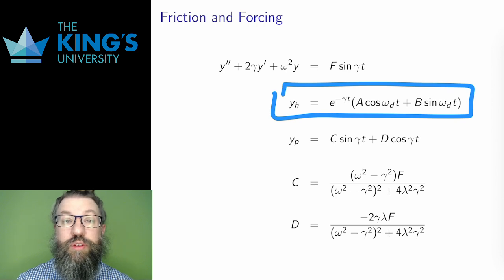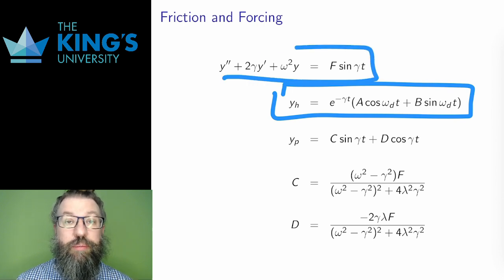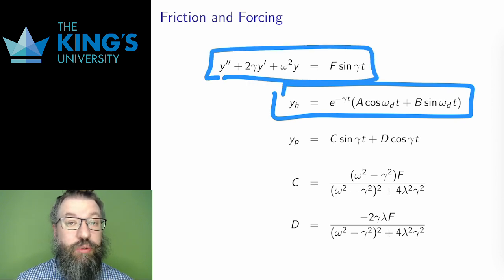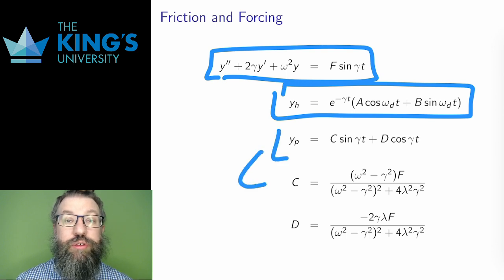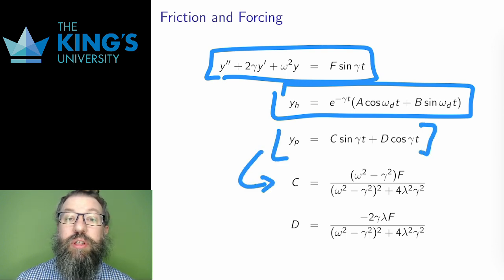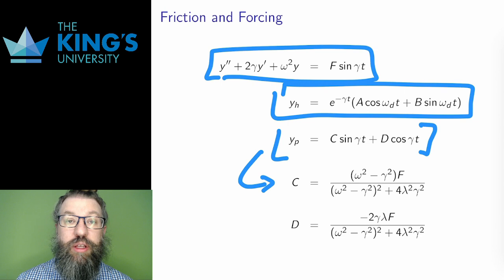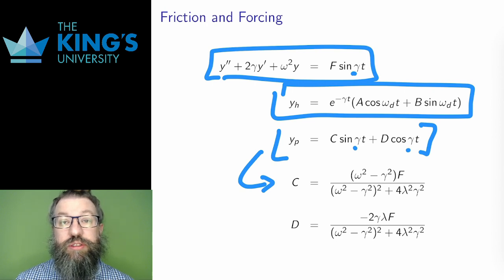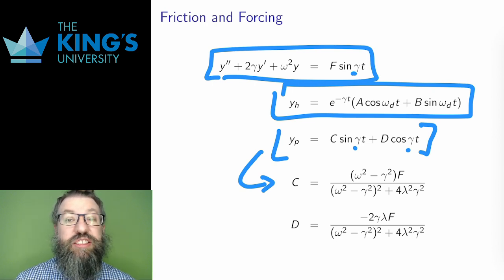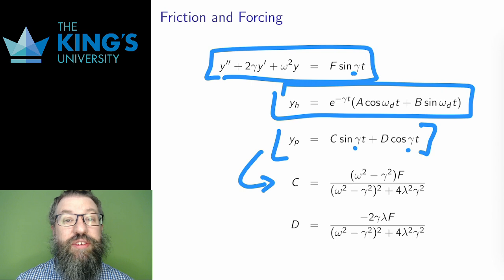I used undetermined coefficients, and here is the guess for the particular solution. Note that this particular solution has the forcing frequency. That's how undetermined coefficients work. The guess has the same frequency coefficient as the forcing. Solving the system for these coefficients is actually pretty messy since it's all a pile of unknown Greek letters, since I'm doing this in general. So I haven't shown all of that work, but this is the result.